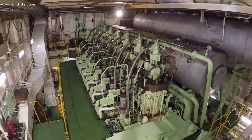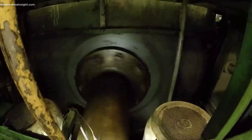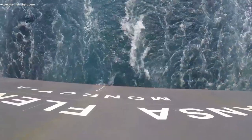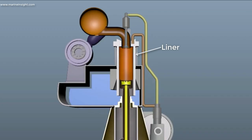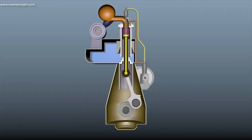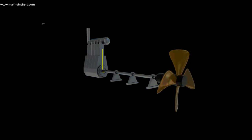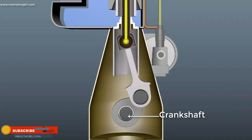The main engine produces power to propel a mega ship at sea. The power is generated inside the cylinder liner where the fuel is compressed and burnt. The power produced inside the cylinder is then transferred to the propeller via connecting rod and crankshaft.